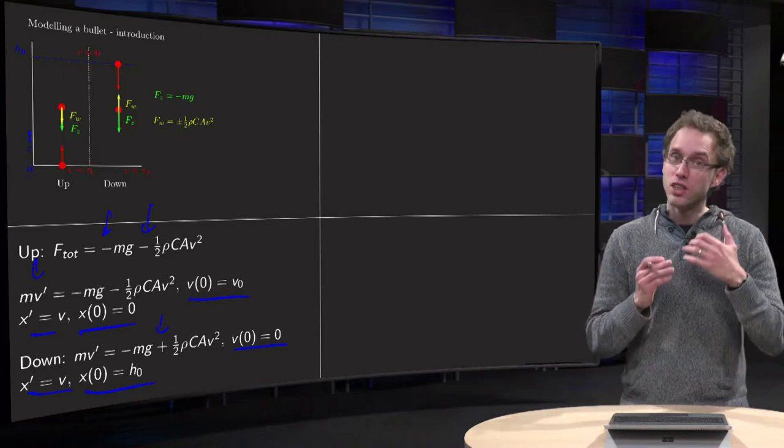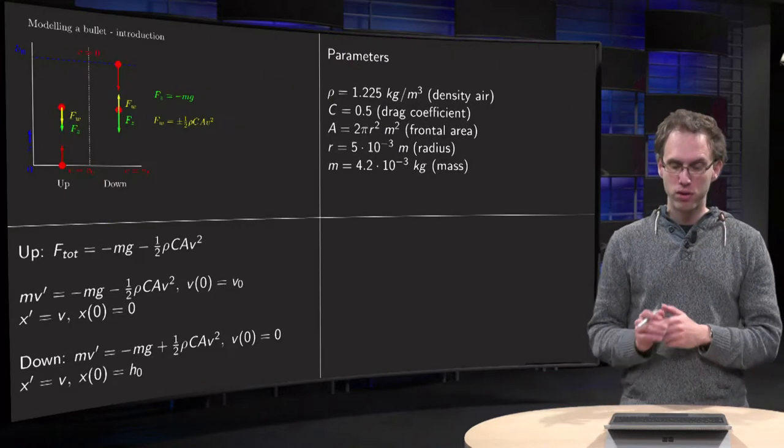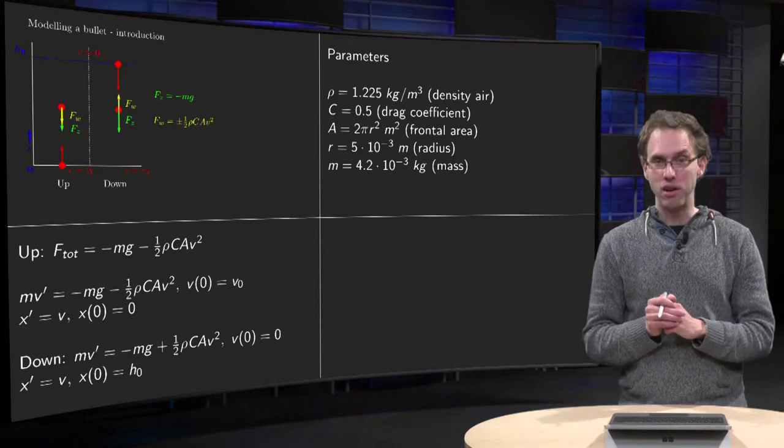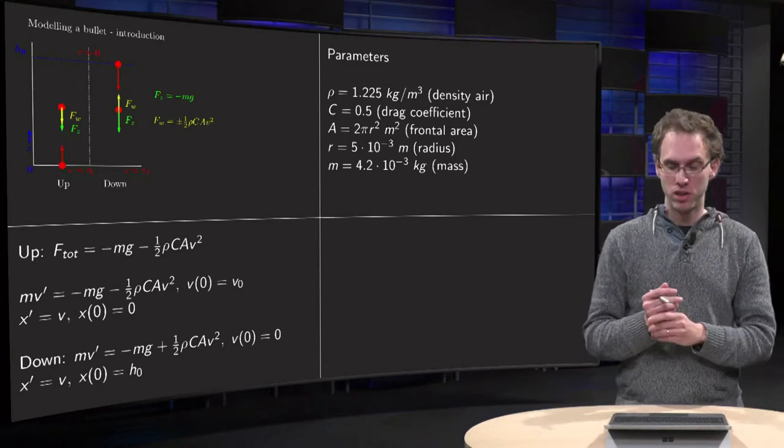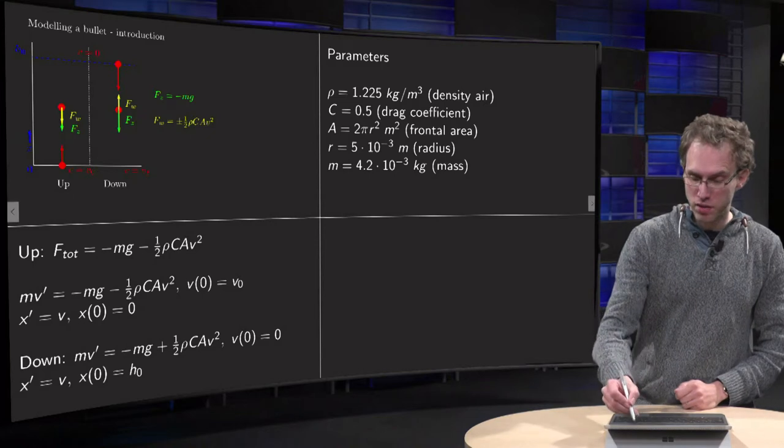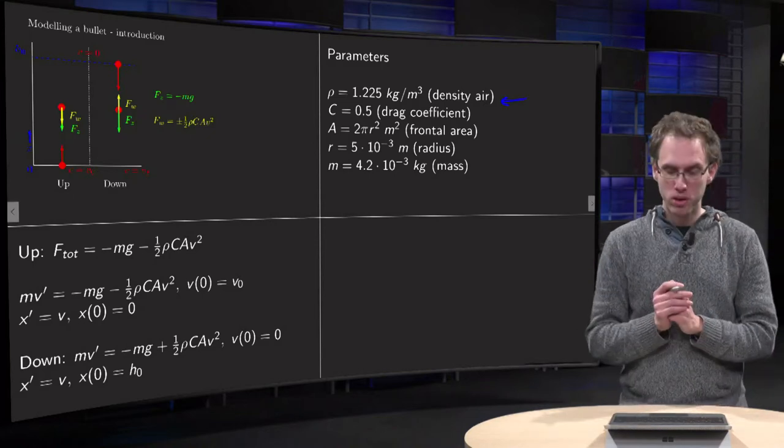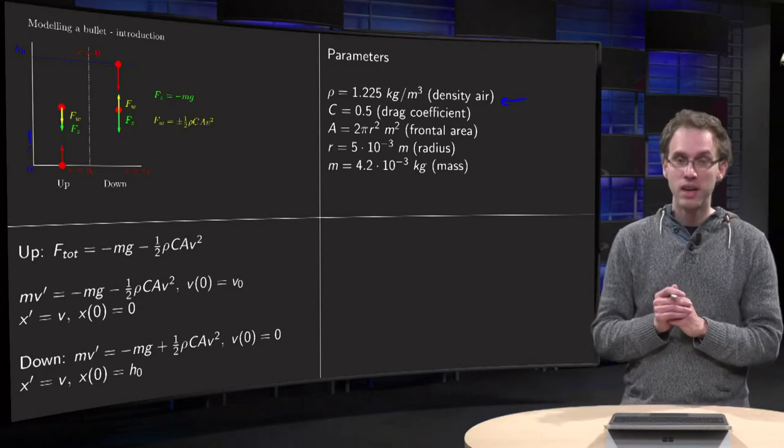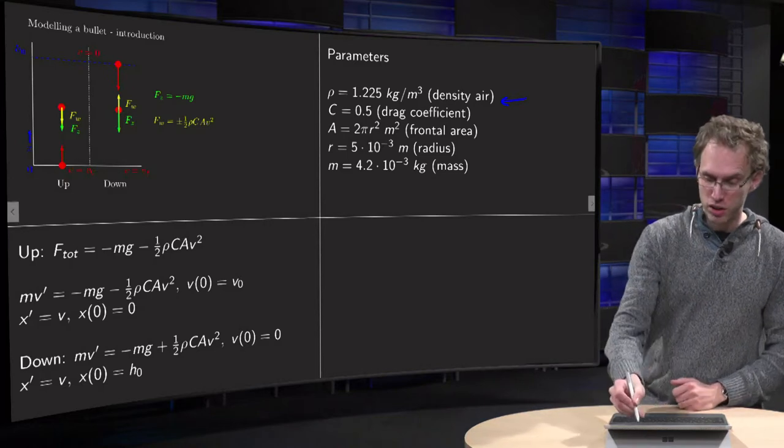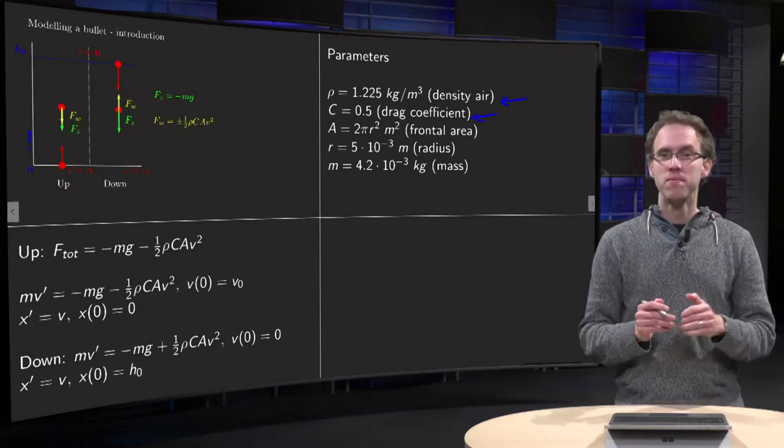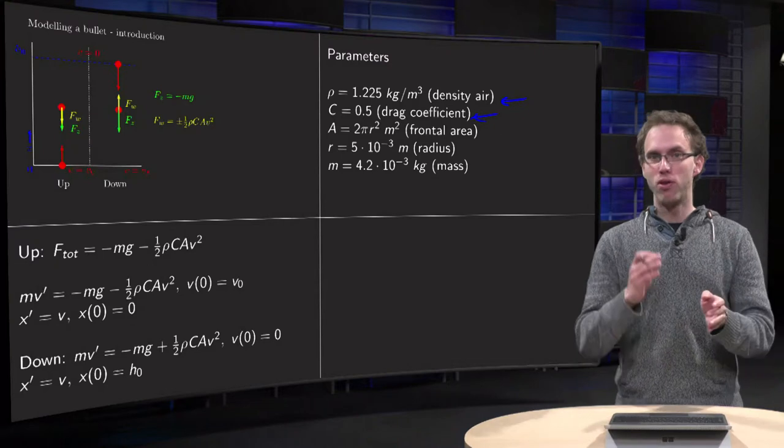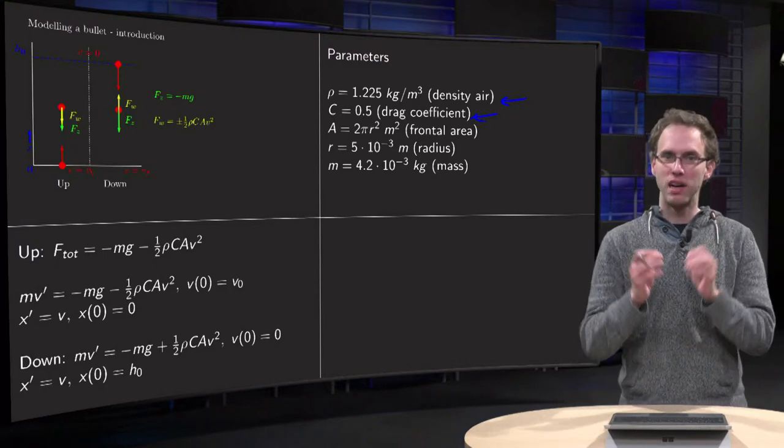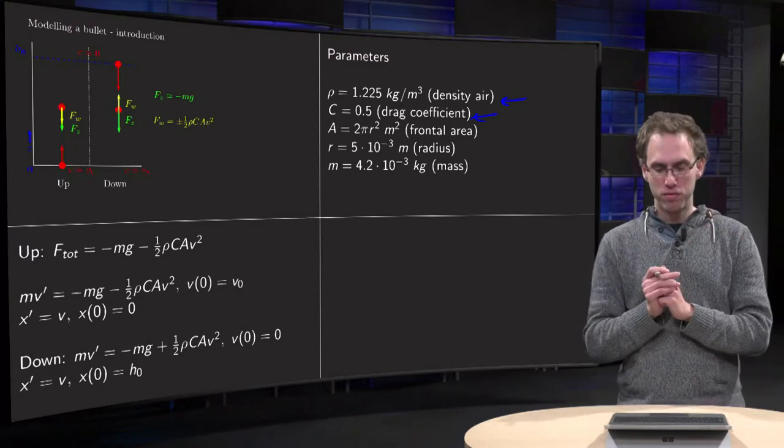Now, let us discuss the values of all those constants. We have lots of constants floating around. Let us discuss the parameters. Rho is the density of air. You can just look it up in kilograms per cubic meter. C is the drag coefficient of the bullet. It can be 0.4 or 0.5 or 0.3, something like that. Pick 0.5.